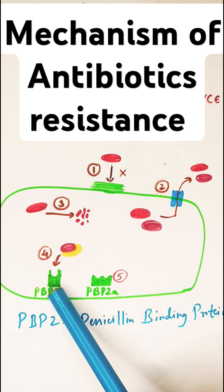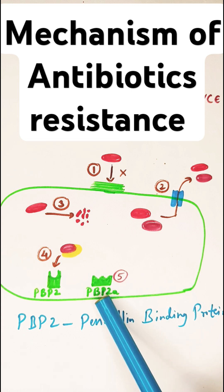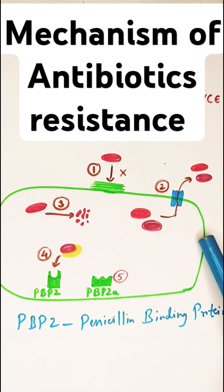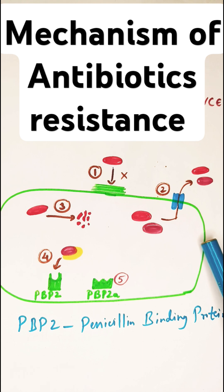Penicillin was inhibiting that. So now what has the bacteria done? It has started producing PBP2a that will go and produce your cell wall.